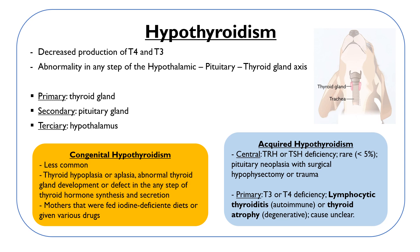Hypothyroidism results from decreased production of T4 and T3 and can arise because of an abnormality in any step of the hypothalamic-pituitary-thyroid gland axis. It can be primary if the underlying lesion is in the thyroid gland itself, secondary if the underlying lesion is in the pituitary gland, or tertiary if the lesion is in the hypothalamus.